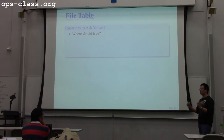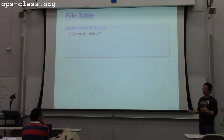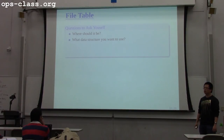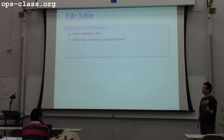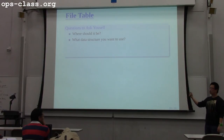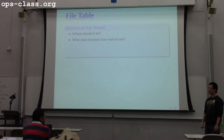When you design your file table, you want to be able to answer these questions: Where should the file table be? Since it's thread-private, you want to put it in the thread structure. What data structure should you use? The file descriptor is an integer, so an array is the most convenient — you can index directly by the file descriptor. Where should you initialize and de-initialize the file table? When you create a thread you have to initialize it. How do you find the next available file descriptor to assign?